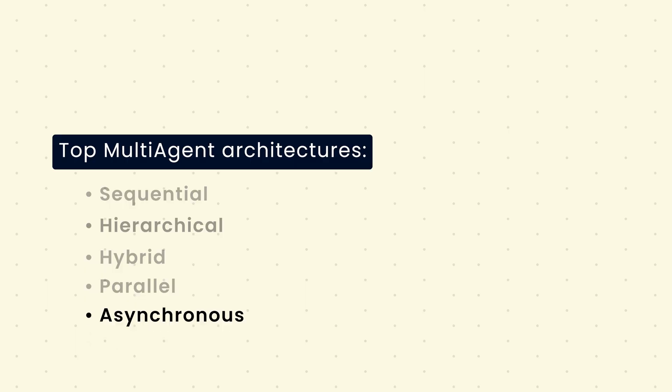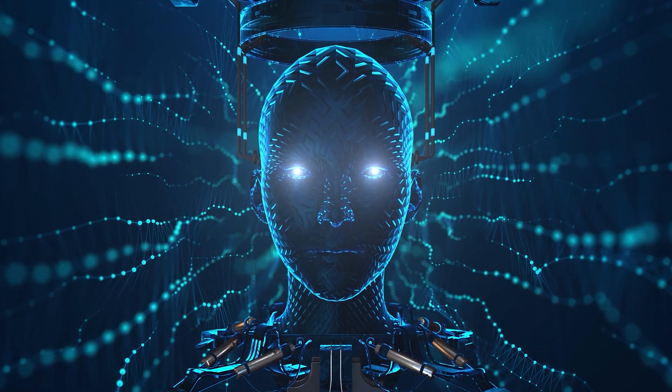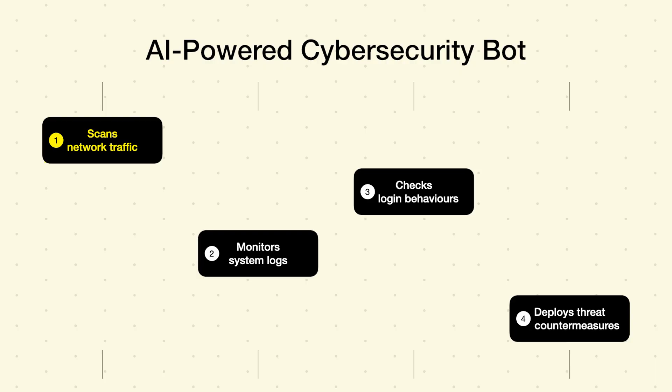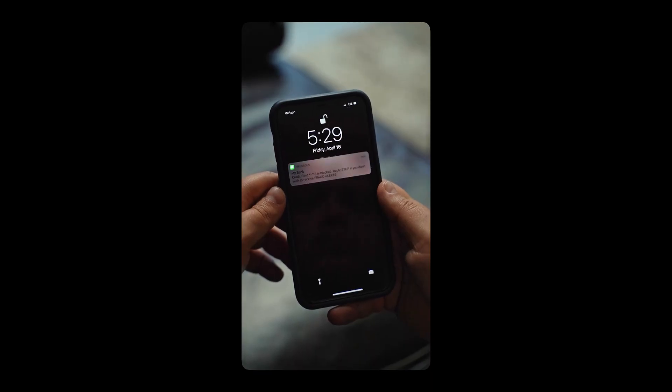The fifth type is asynchronous agents. In an asynchronous system, agents work independently and react to events instead of following a strict sequence. For example, in an AI-powered cybersecurity bot: agent 1 scans network traffic for potential threats, agent 2 monitors system logs for unusual patterns, agent 3 checks login behaviors for anomalies, and agent 4 deploys countermeasures if a threat is detected. These agents don't follow a fixed workflow — they react whenever an event occurs. This structure is ideal for real-time monitoring and cybersecurity.